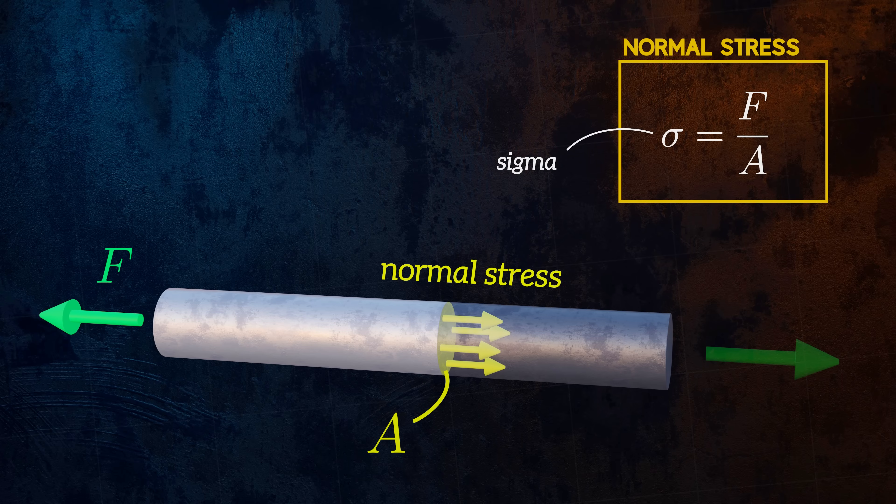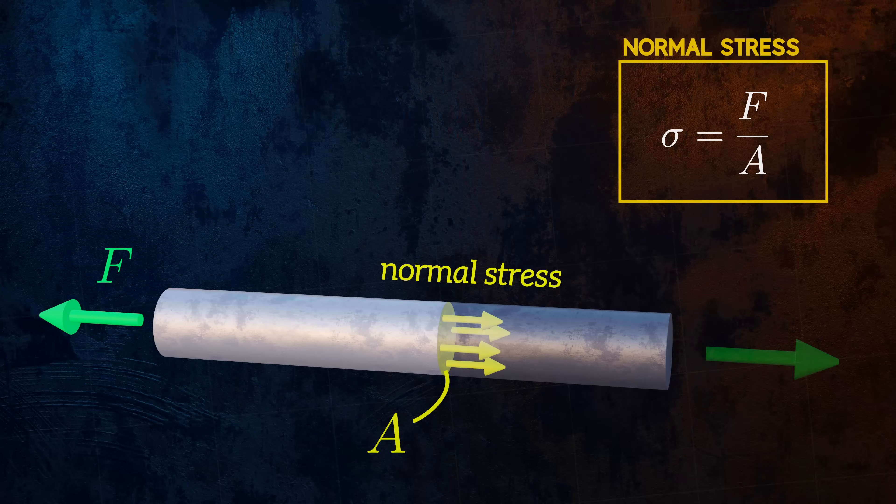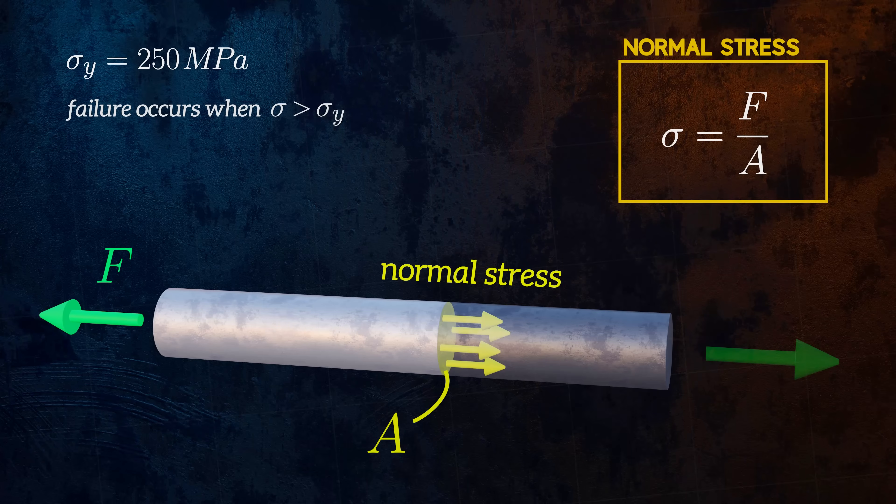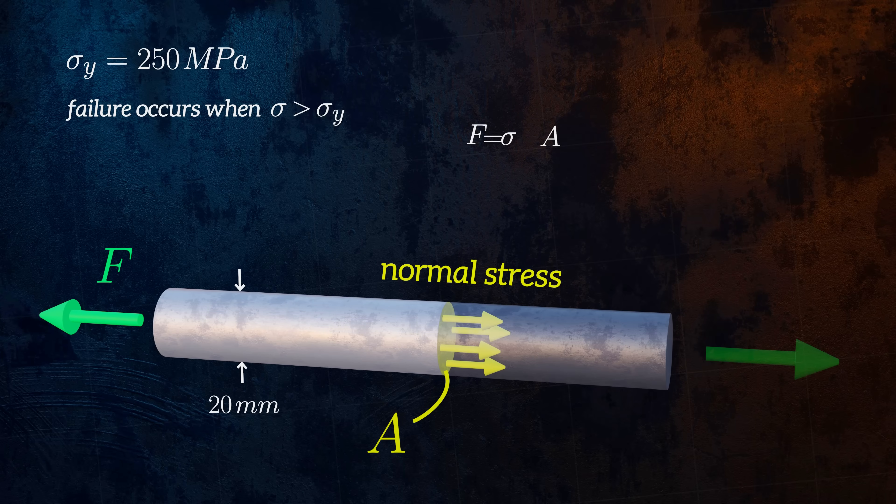One reason being able to calculate stresses is important is because it allows us to predict when an object will fail. Let's say our bar is made from mild steel, which has a strength of 250 megapascals. The bar will fail when the stress within it exceeds the strength of the material. If our bar has a diameter of 20 mm, for example, we can calculate that it will fail if the applied force is larger than 79 kilonewtons.